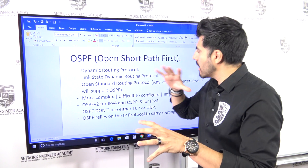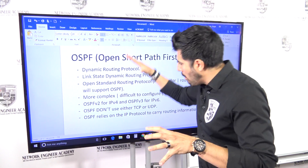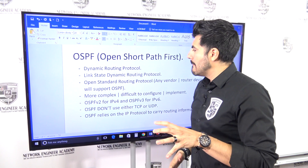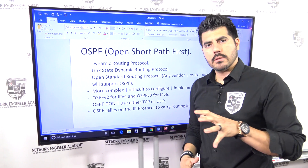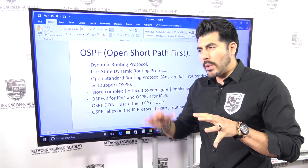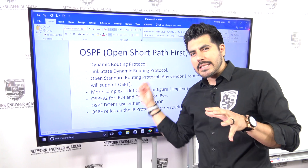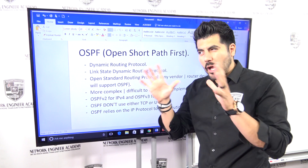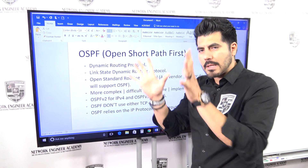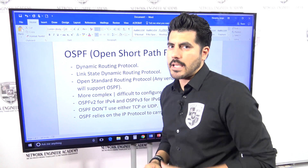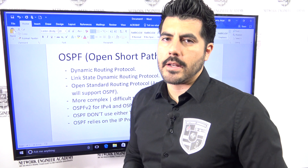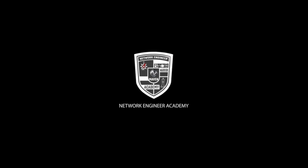Before going to the next video, go through this information, make it your own, go through it the way I'm telling you to go through it so you can get it and start connecting this new information with what already makes sense to you. Remember the first week — the process of learning how to learn. Don't jump to the next video; make sure you go through this process the way you're supposed to, then go to the next video so we can jump back to the lab and start building the OSPF network. I'll talk to you in the next video.